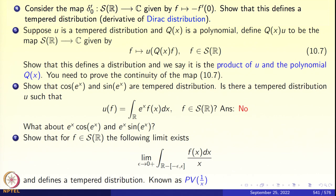Another example: if u is a tempered distribution and q(x) is a polynomial, define the product q·u by (q·u)(f) = u(q·f) — simply multiply f by the polynomial before applying u. This new distribution q·u is a continuous map from S(R) to the real line. You need to prove that this map 10.7 is indeed continuous, which furnishes yet another example of a tempered distribution.